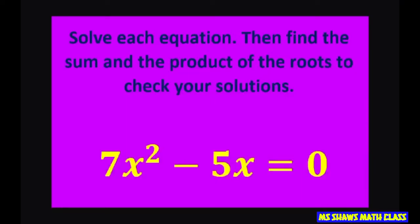Hi everyone! We're going to solve 7x squared minus 5x equals 0. Then we're going to find the sum and the product of the roots to check our solution.